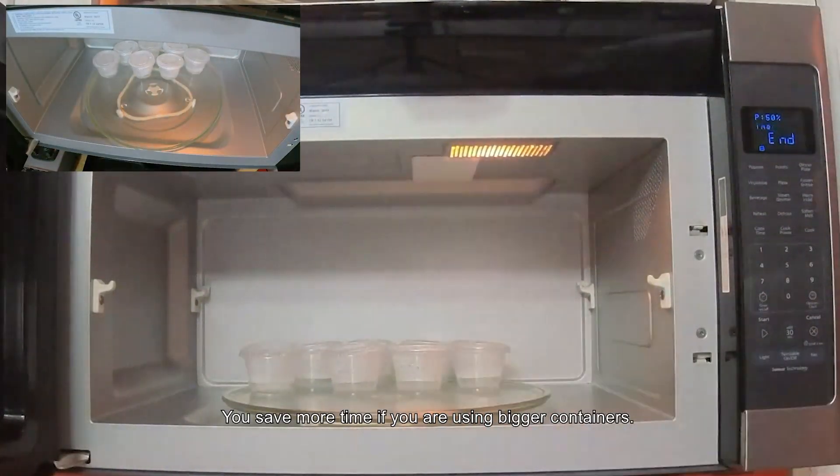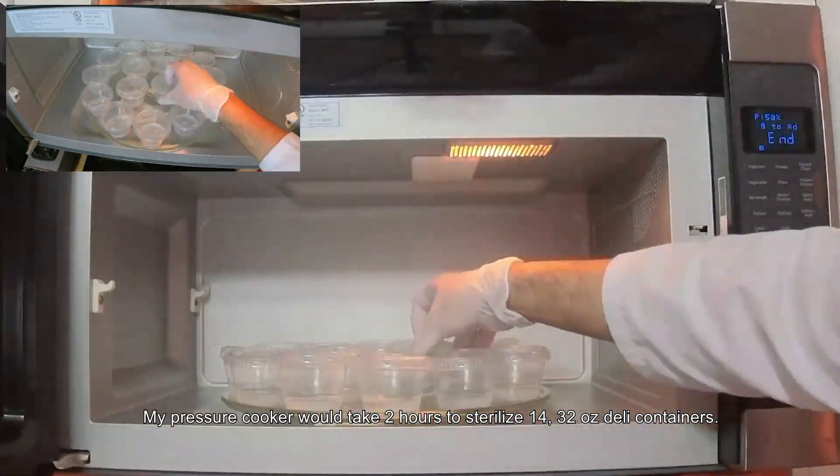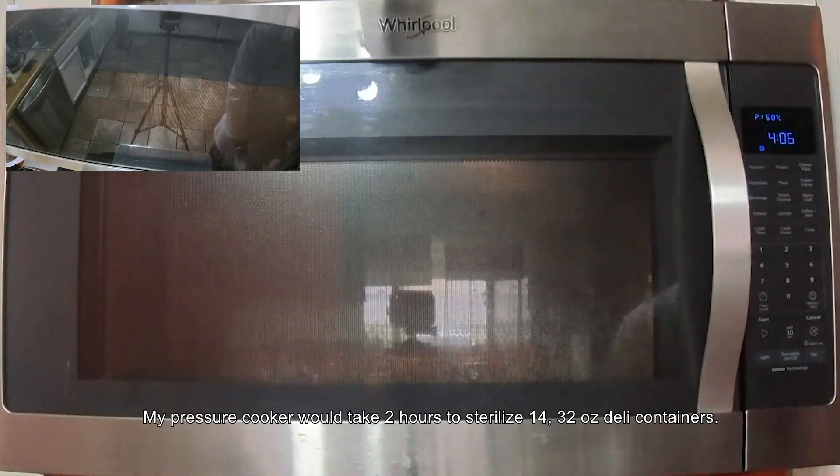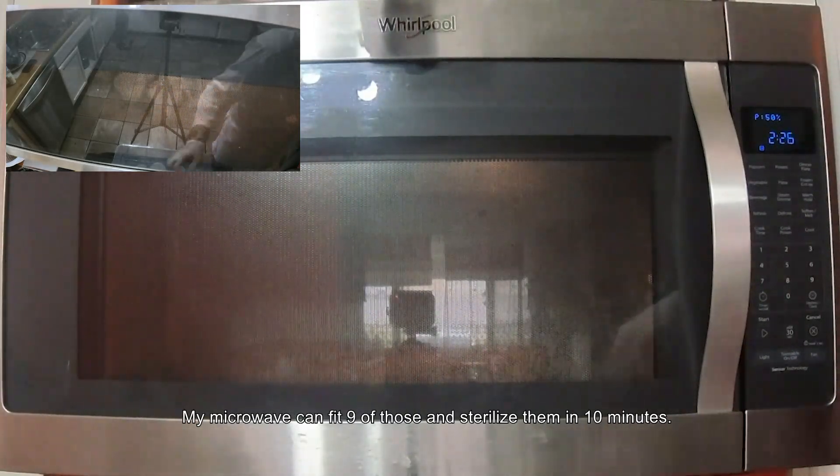You save more time if you're using bigger containers. My pressure cooker would take 2 hours to sterilize 14 32-ounce deli containers. My microwave can fit 9 or 2 and sterilize them in 10 minutes.